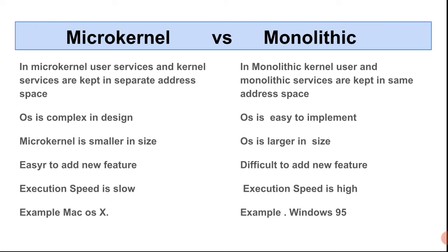Execution speed in microkernel is slow due to its separate address space. In monolithic kernel, the execution speed is very high. An example of a microkernel is Mac OS X, while monolithic kernel includes Windows 95.